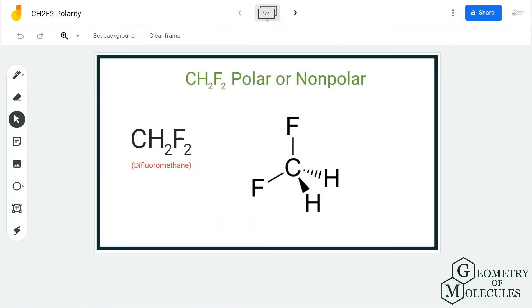Hi guys, welcome back to our channel. In today's video, we are going to determine the polarity for CH2F2 molecule. It has a chemical name of difluoromethane. To check if the molecule is polar or nonpolar, we are going to look at its Lewis structure followed by its shape, and then we are going to check the electronegativities of the atoms.